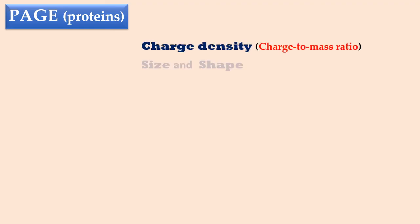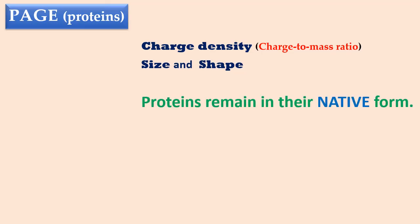So, we now understand that in PAGE, migration of proteins depend on the combination of multiple factors. These are charge density, size, and shape of the protein molecules. Here, you must have noted that the protein molecules remain in their native form, or in other words, they remain intact.